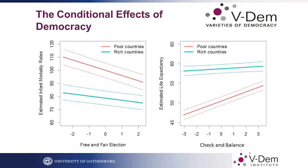This graph shows a similar pattern, but the x-axis is the parliamentary power or institutional check and balance, and the y-axis is life expectancy. We found that in poor countries, the effect of democracy on health is especially significant.